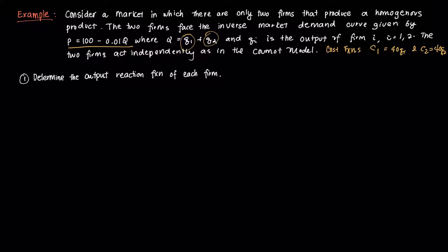The first thing we need to determine is the equilibrium output reaction function of each firm — the ORF, or best response function, for each of the two firms. To get the ORF, we solve for each firm's first-order condition.